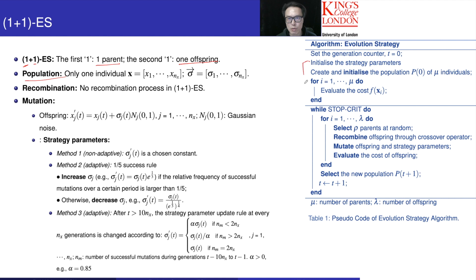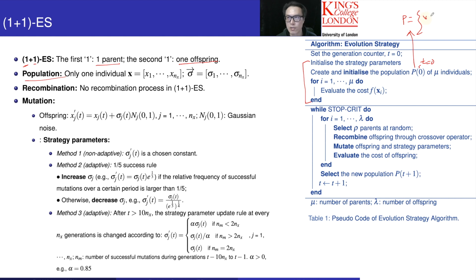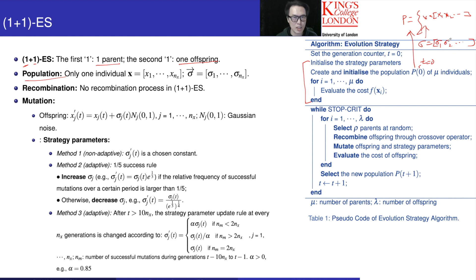When we talk about 1 plus 1 ES, we initialize the strategy parameter as well as the population at t equals 0. We only have one parent, which is x equals x1, x2, and so on. Associated with this x, we have sigma — that is sigma1, sigma2, and so on. Sigma is the strategy parameter of this x, and each x1, x2 is associated with sigma1, sigma2 accordingly. So we have x and sigma in the population.